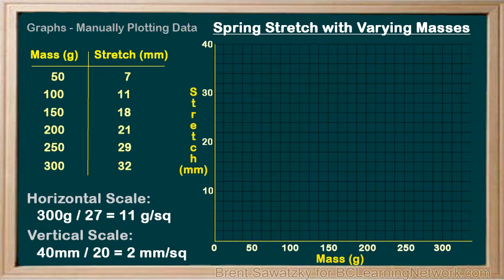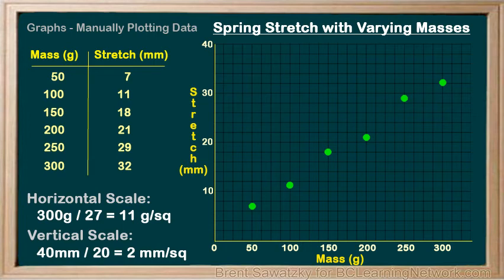We're ready to plot our data now — and here's the plotted data. The relationship looks nice and linear. We usually draw a best-fit line at this point. Drawing a best-fit line doesn't mean the line has to cross through every point; in some extreme cases it may not cross through any points, though that's not typical. Usually it crosses through some points and misses others. The main thing is that a best-fit line shows the trend of your data. In our data there is clearly a linear relationship, so we draw our line through the data — a good representation of the data and its trend.